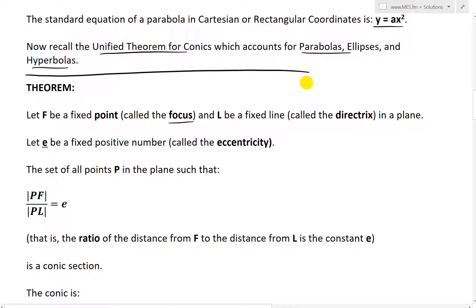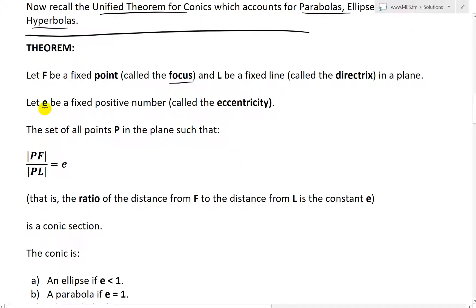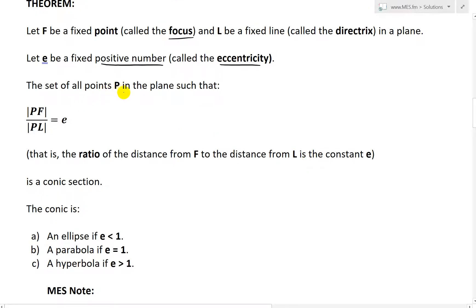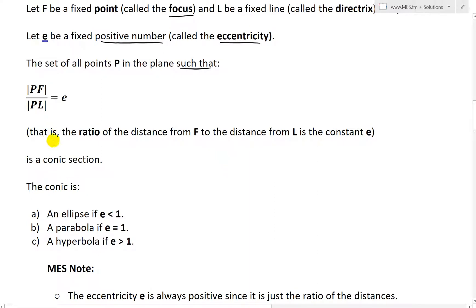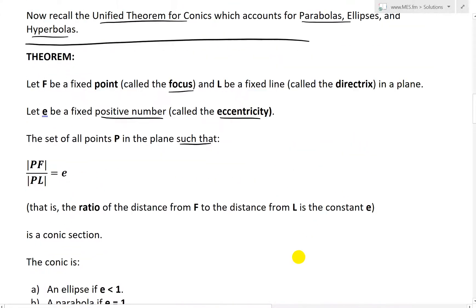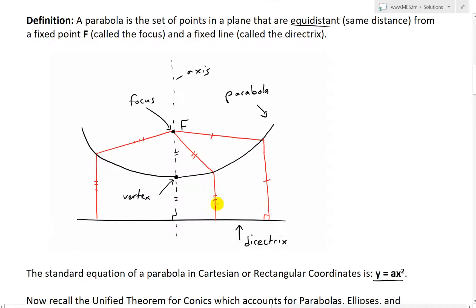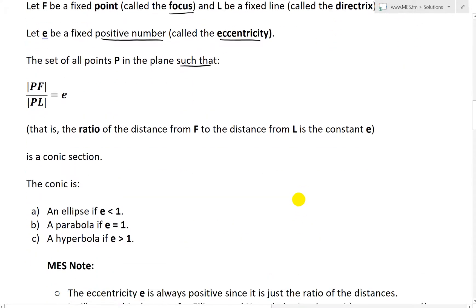But now what we'll do is look at or introduce a new variable called E. So let E be a fixed number, just a constant called the eccentricity. And it's a fixed positive number. It's going to be a ratio. So the set of all points P in the plane such that the distance from the point to the focus F divided by the distance from the point to the directrix, which is going to be L, is going to be equal to E. So the ratio of these two, and these are in distances, so it's always going to be positive. So basically that is the ratio of the distance from F to the distance from L is the constant E. So in other words, over here, you could see if these are equal, the ratio has to be equal to 1. In fact, that is a proof in of itself.